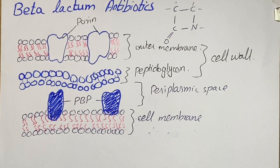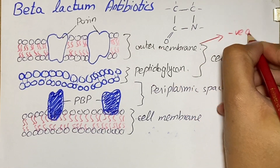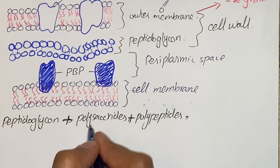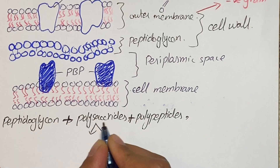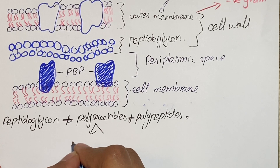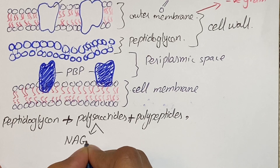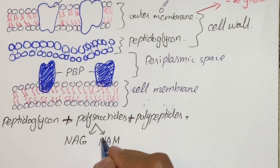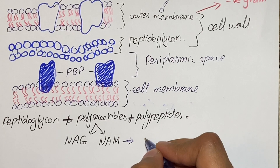In gram-positive bacteria there is absence of an outer membrane, therefore the cell wall consists of only peptidoglycans. Peptidoglycans are also called murein or mucopeptide, and they consist of polysaccharides and polypeptides. These are polymers having cross-linkages between polysaccharides and polypeptides. The polysaccharides consist of two amino sugars present alternately — NAG and NAM, that is N-acetylglucosamine and N-acetylmuramic acid.